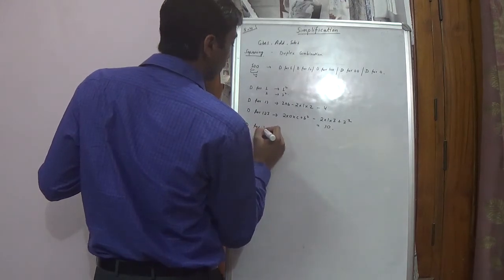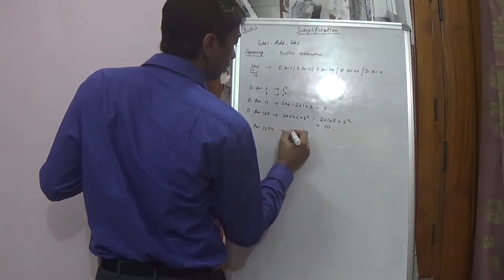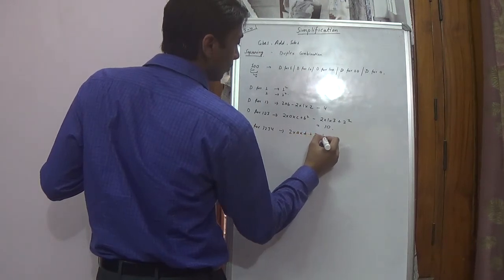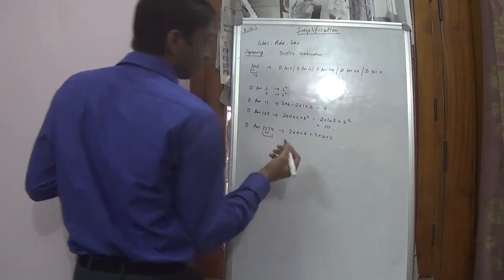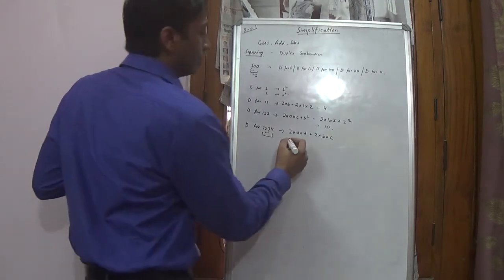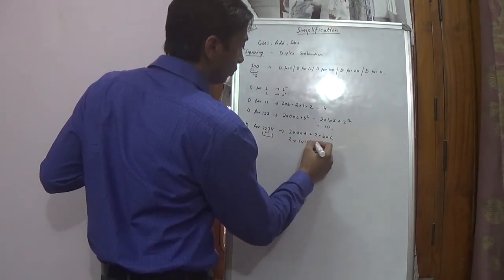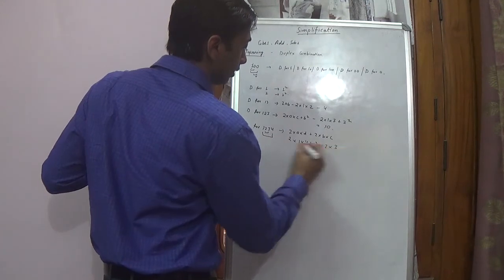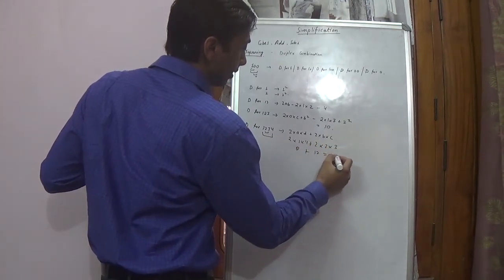For 4 digits — for example 1, 2, 3, 4 — the duplex is 2 into 1 into 4, plus 2 into 2 into 3. So that is 8 plus 12, which equals 20.